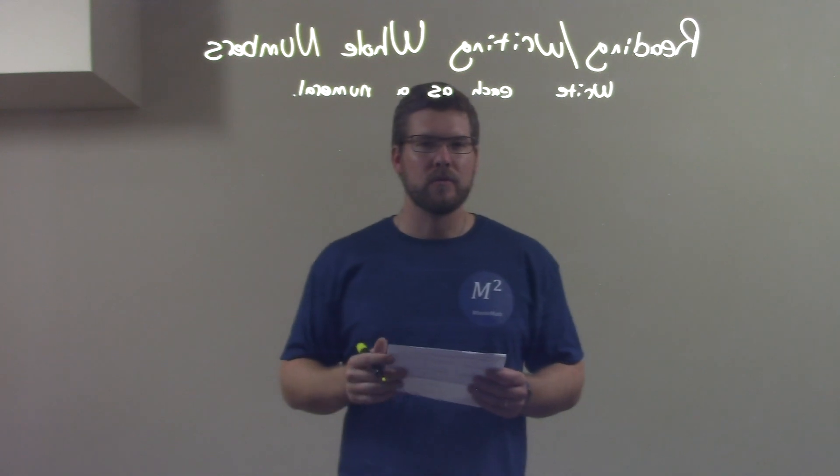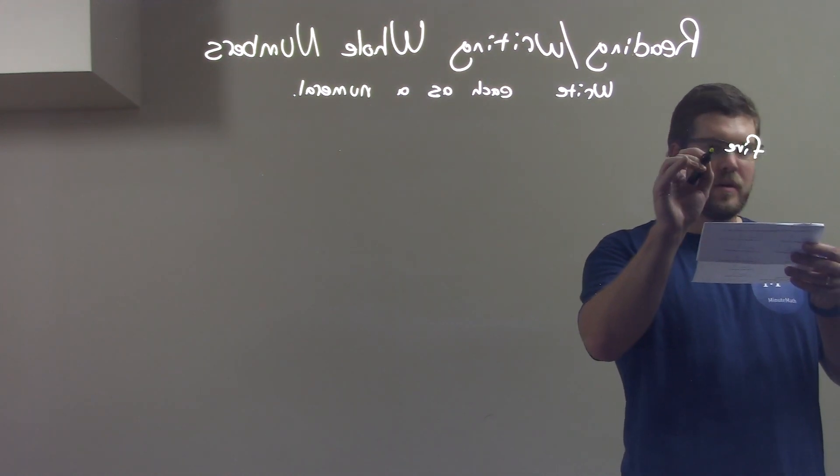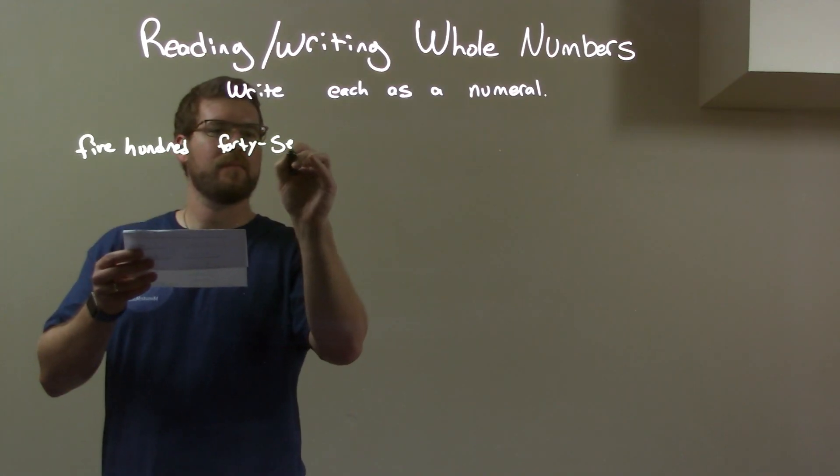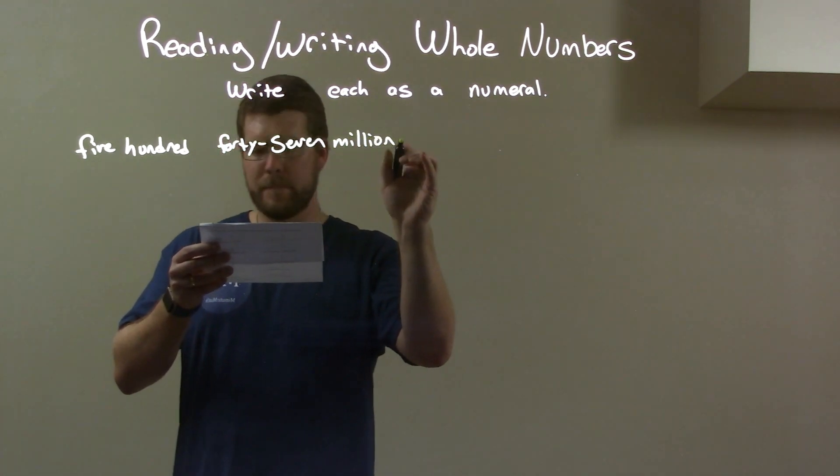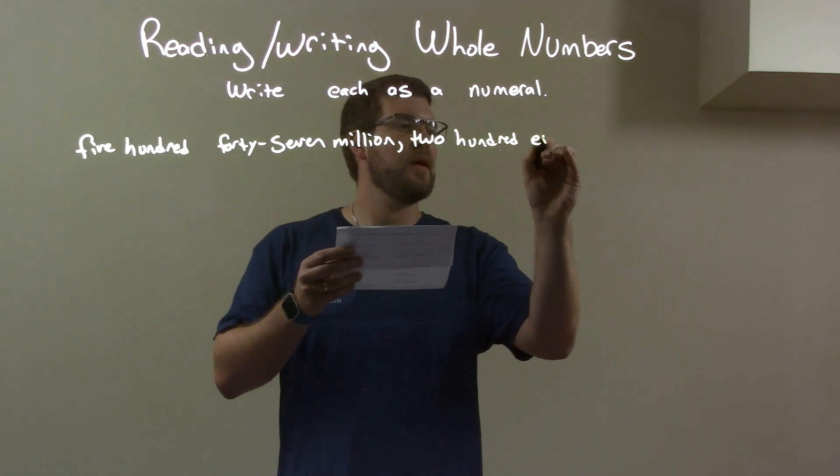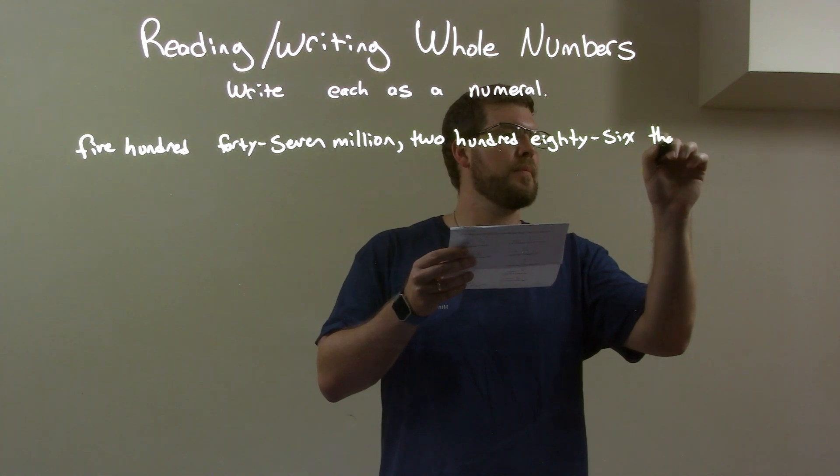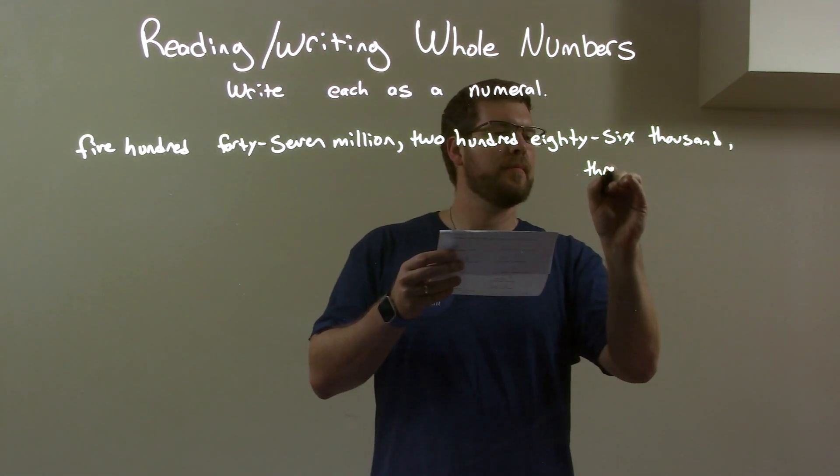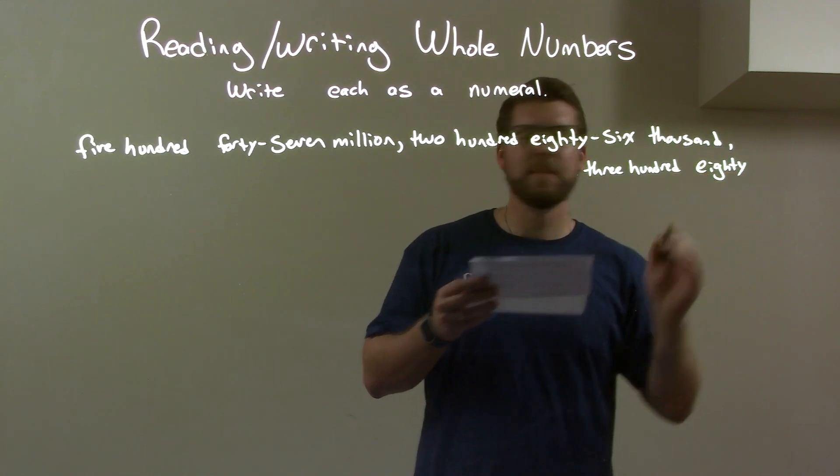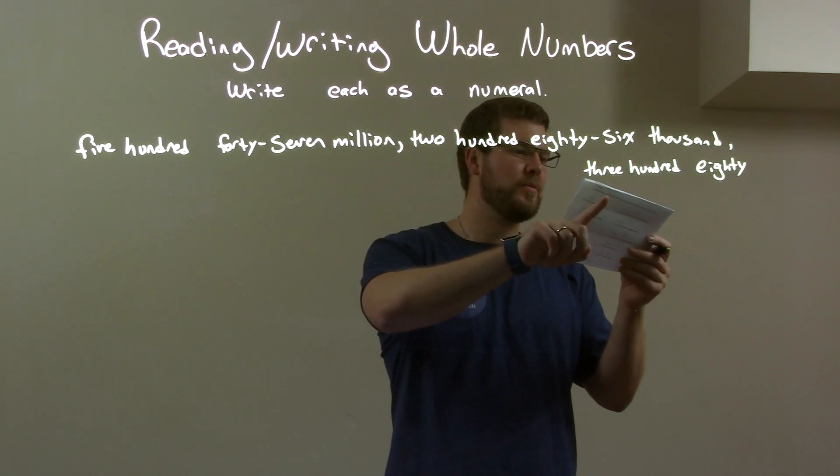Write each as a numeral. So if I was given this number: five hundred forty-seven million, two hundred eighty-six thousand, three hundred eighty. Let's check that: five hundred forty-seven million, two hundred eighty-six thousand, three hundred eighty.